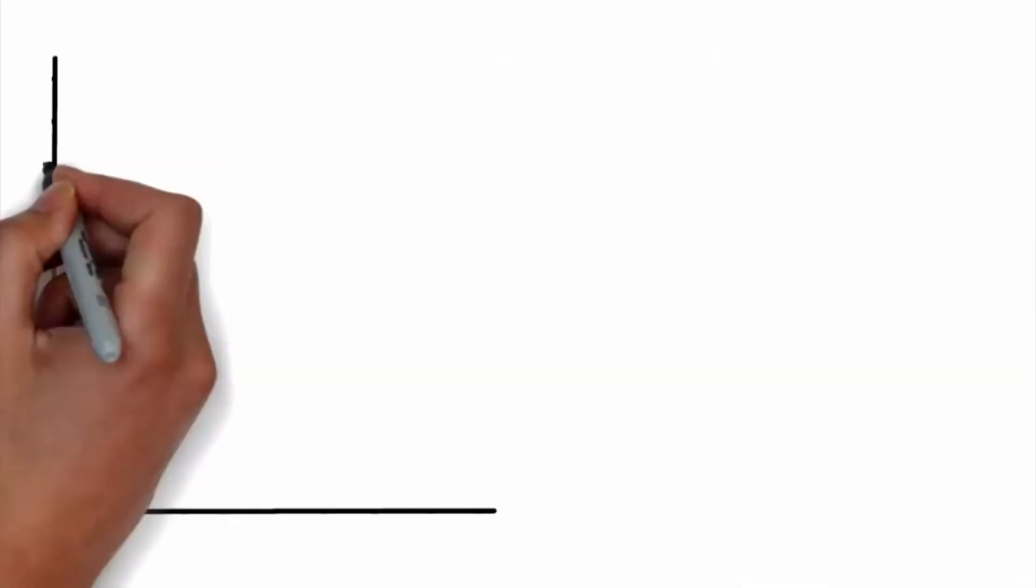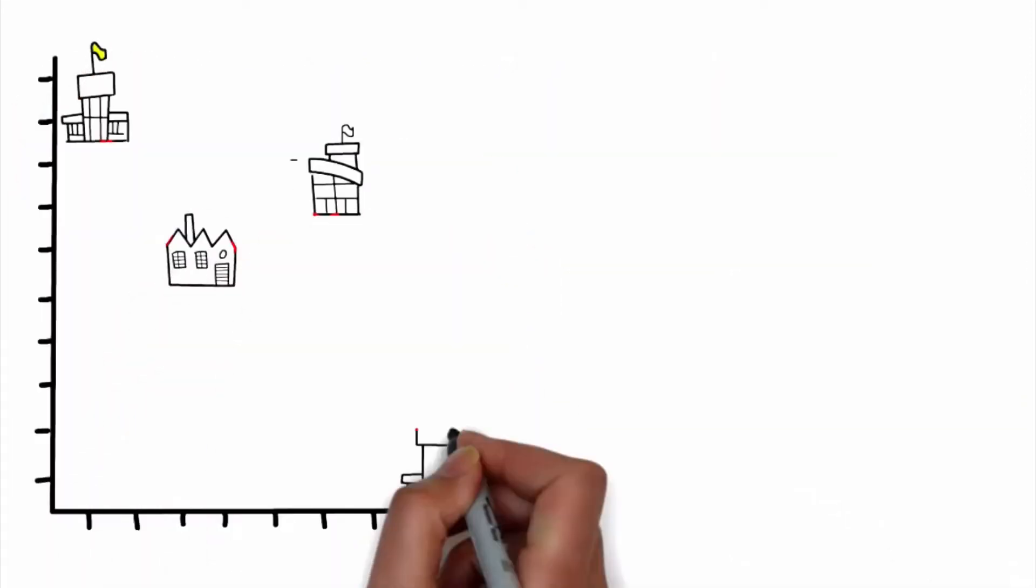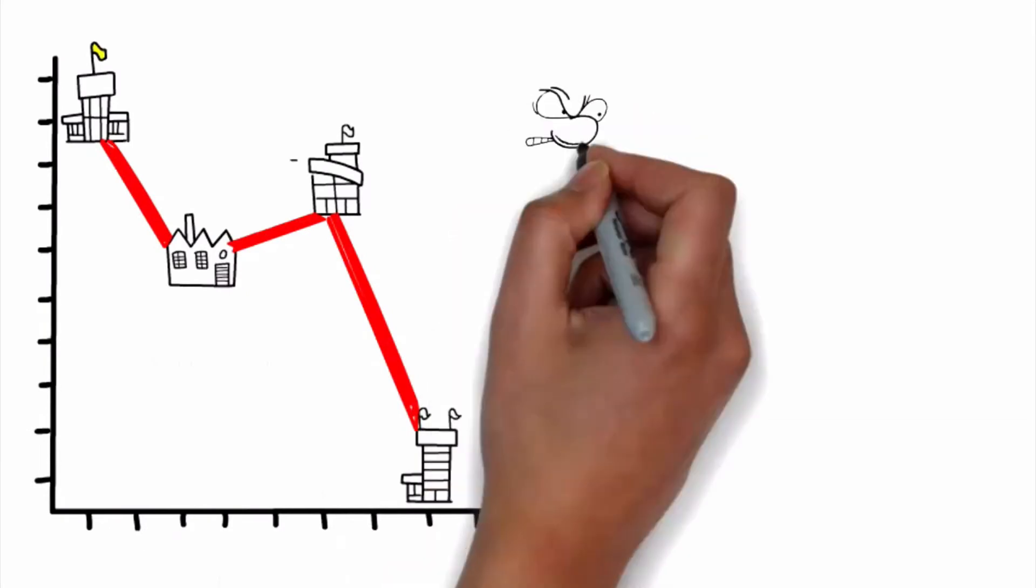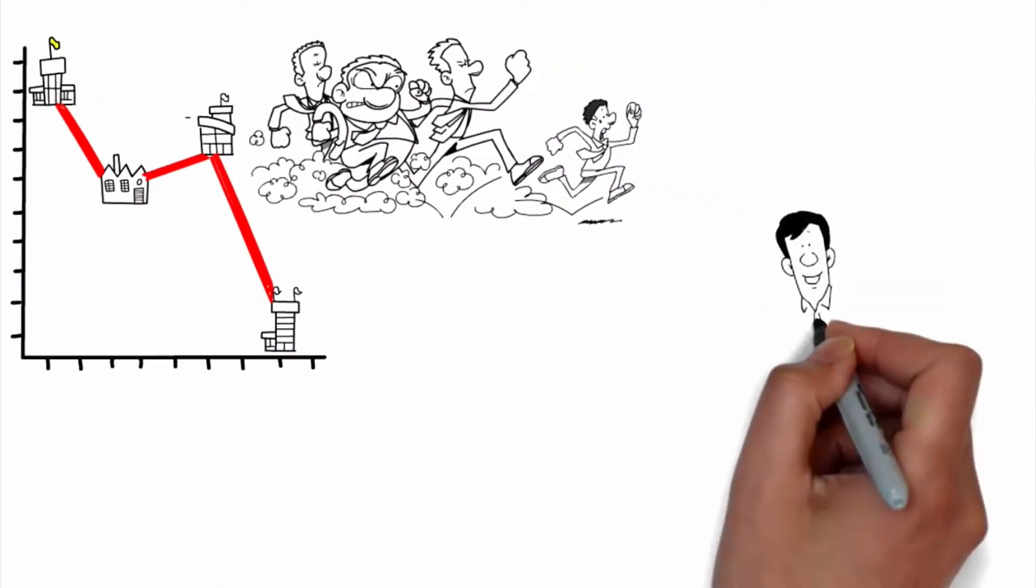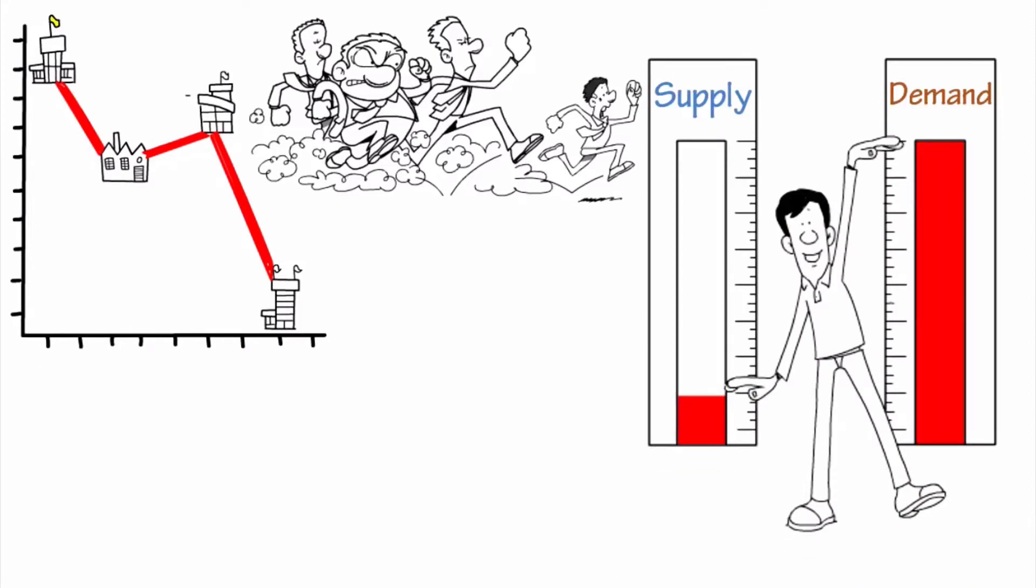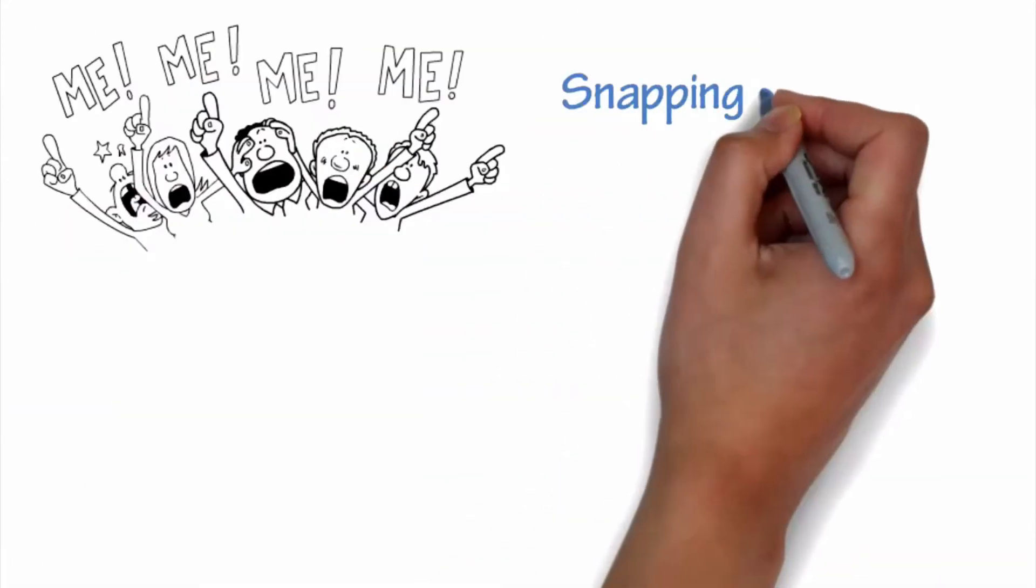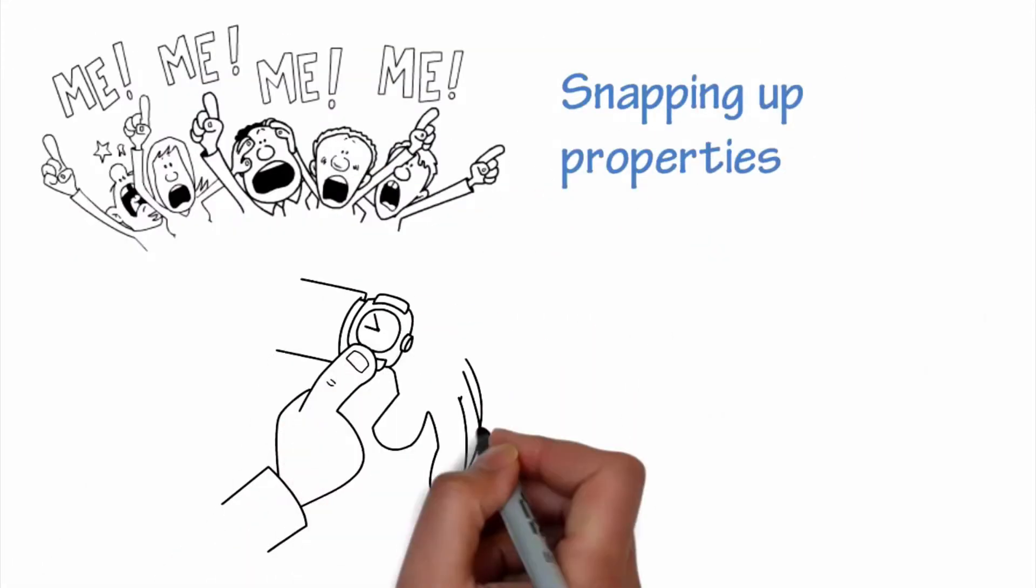the time to sell. Currently, the inventory of homes for sale is quite low. We are seeing bidding contests for desirable homes. This is a seller's market, folks. Homebuyers are busy snapping up properties, making this the ideal time for...